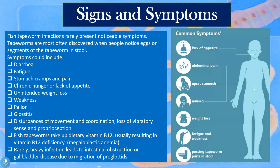Fish tapeworm infections rarely present with noticeable symptoms. The tapeworms are most often discovered when people notice eggs or segments of the tapeworm in their stool. However, some patients may experience diarrhea, fatigue, stomach cramps and pain, chronic hunger or lack of appetite, unintended weight loss, weakness, pallor, glossitis, disturbances of movement and coordination, and loss of vibratory sense and proprioception. Importantly, the fish tapeworm absorbs a large amount of dietary vitamin B12, resulting in a vitamin B12 deficiency and the onset of megaloblastic anemia.